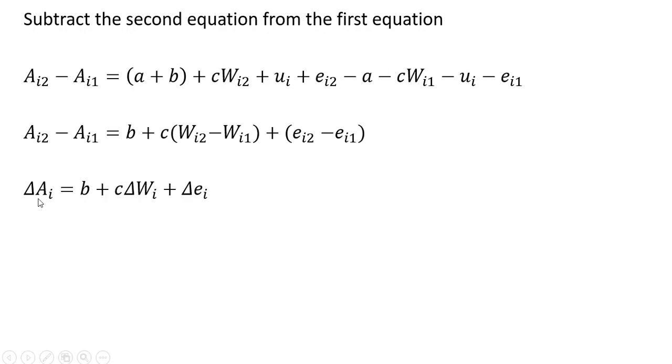In shorthand notation, we got the change in attendance on the left-hand side. That is our dependent variable. And we got the change in the winning percent on the right-hand side, which would be our independent variable. This is our first differenced equation. Each variable is just differenced over time.